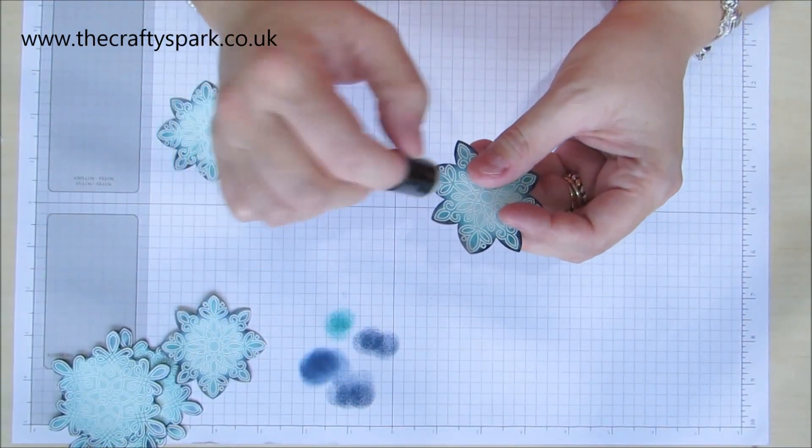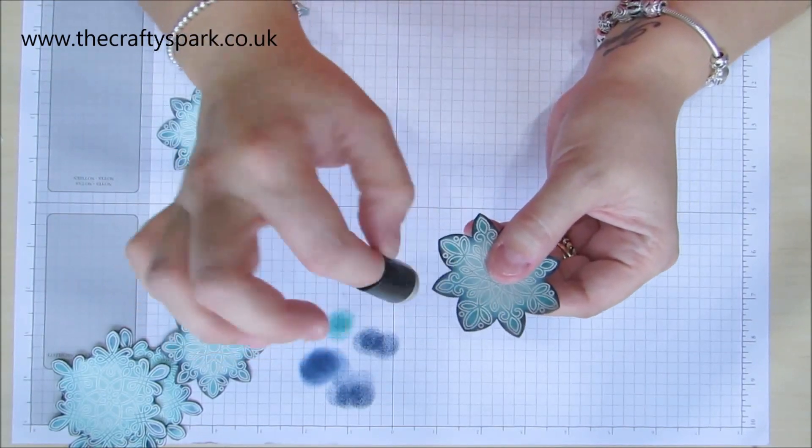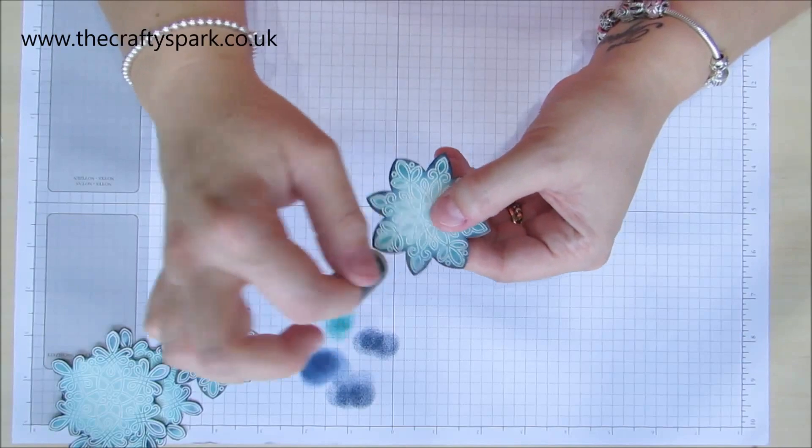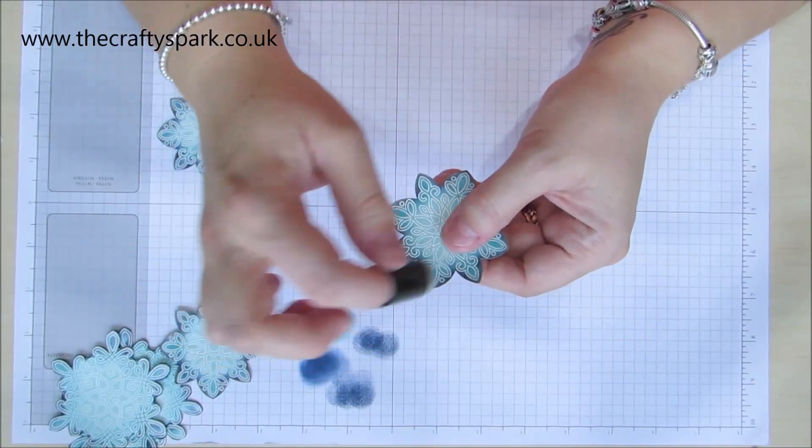But at the same time it doesn't mask the navy because I don't actually want the navy covered up. I just wanted to give it, it's almost like a pearly effect, but it's just enough just to take the darkness off the navy so it doesn't look too black.